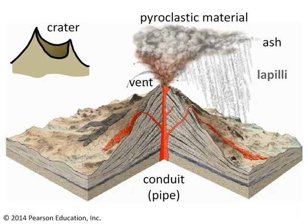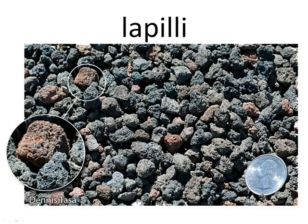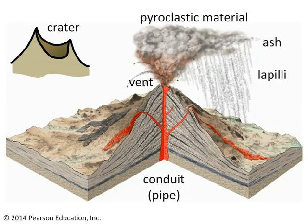Larger than ash are lapilli. Perhaps the rain of particles we see dropping out of an ash cloud and falling toward the ground — those are lapilli. Lapilli are medium-sized volcanic fragments. Here we see some basaltic composition lapilli; there's a quarter for scale, so you get a sense that these things are about between the size of a sand grain and the size of a ping pong ball.